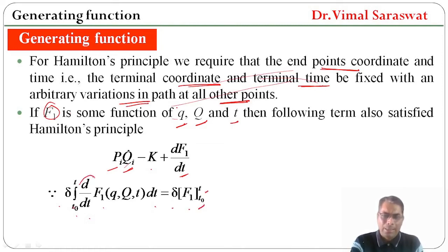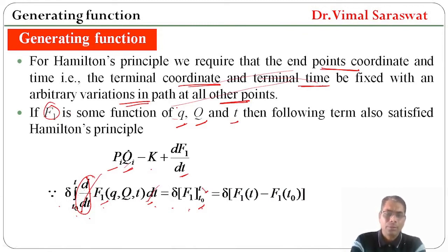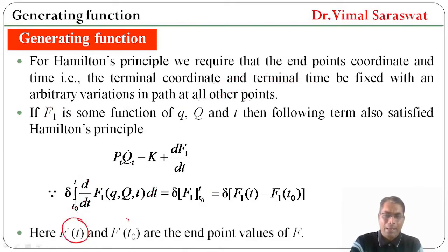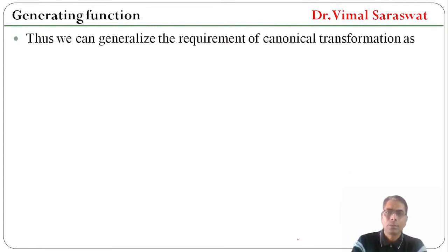Since delta of the integral from T0 to T of (d/dt of F1) dt equals delta F1 evaluated from T0 to T — because we are differentiating F1 and then integrating, so differential and integration cancel out — we get delta(F1(T) minus F1(T0)). Here F(T) and F(T0) are the endpoint values of the function F1.